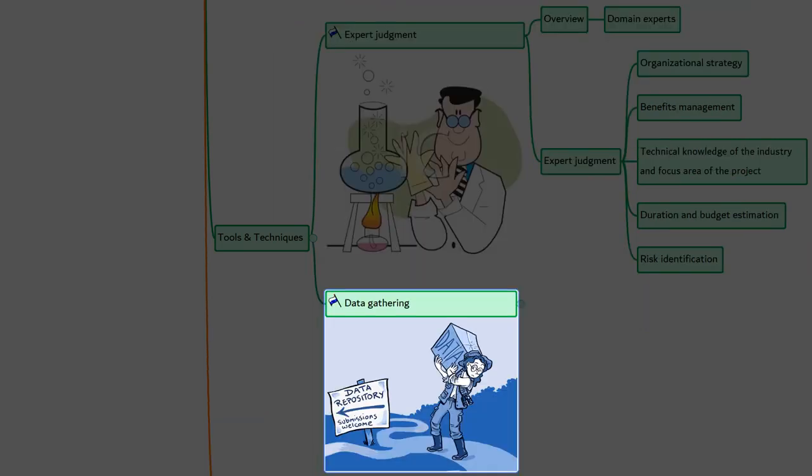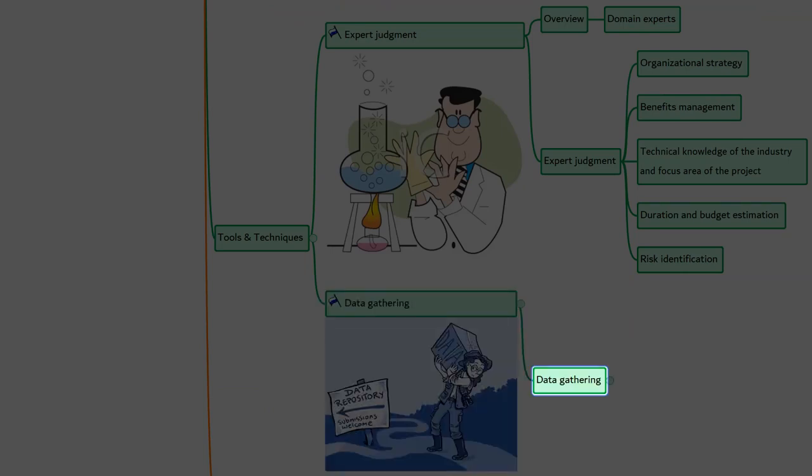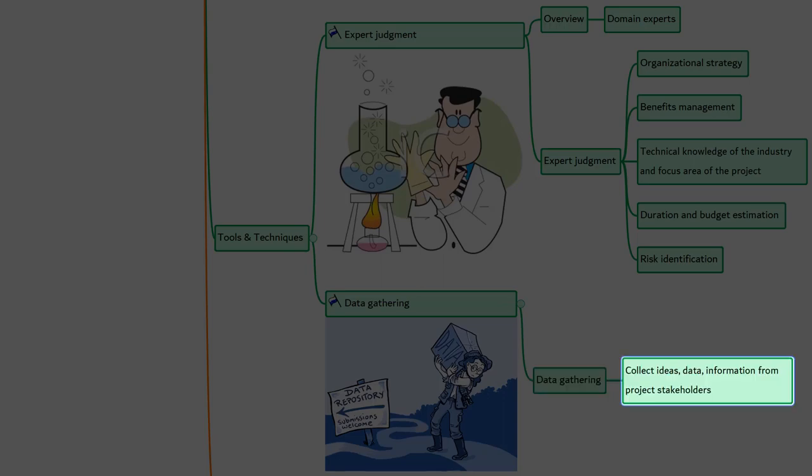The next is data gathering. Data gathering techniques are used to collect ideas, information, and data from stakeholders, subject matter experts, and team members. In data gathering, we have brainstorming, focus groups, and interviews. Let's look at them.